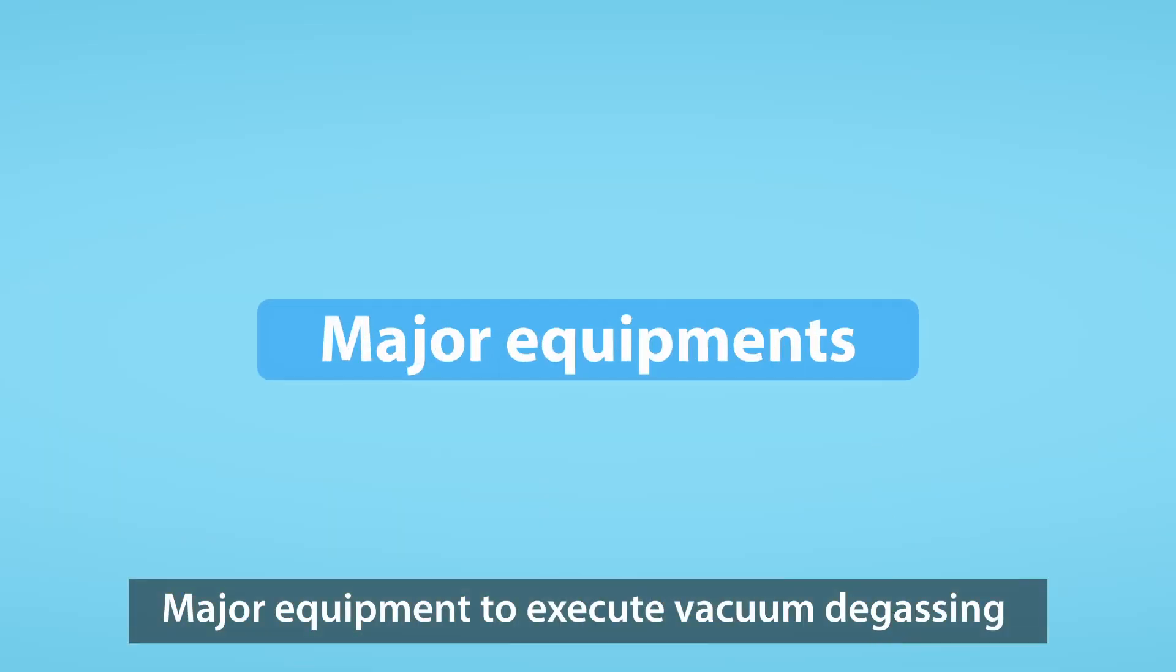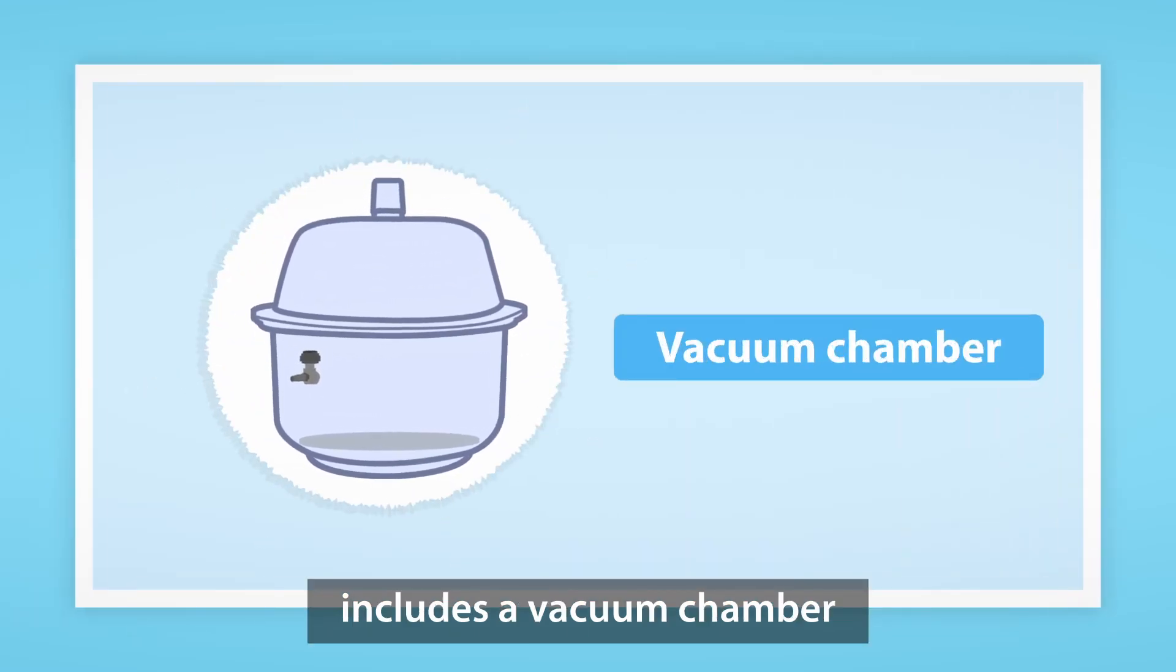Major equipment to execute vacuum degassing includes a vacuum chamber and a vacuum pump.